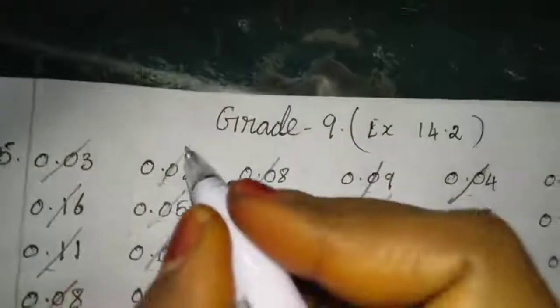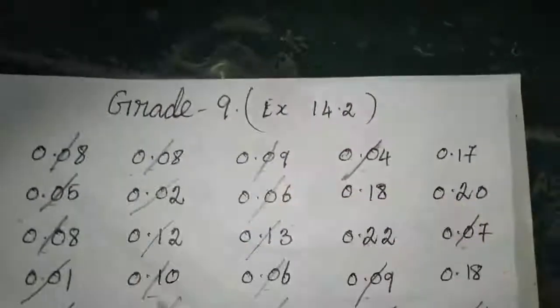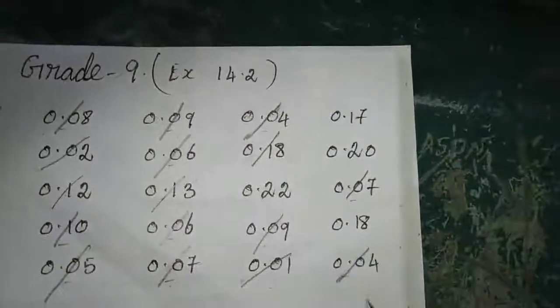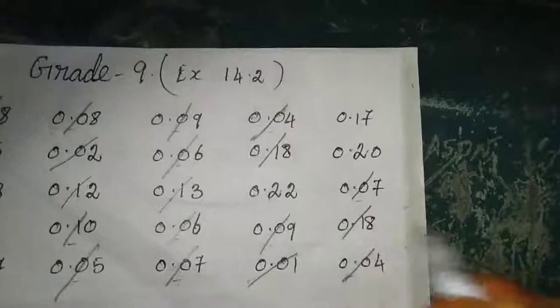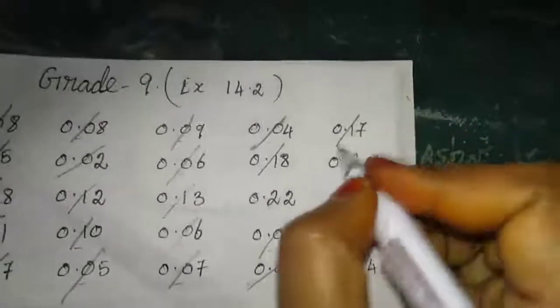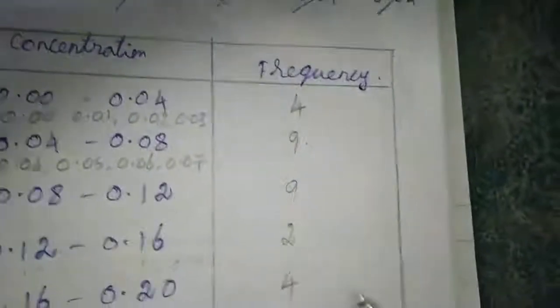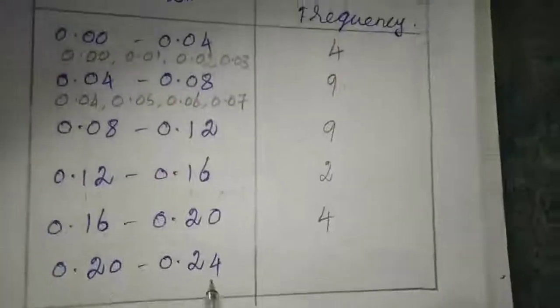Next one 0.16 to 0.20, see here: 1, 2, 3, here 4, so we have 4.